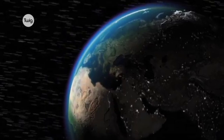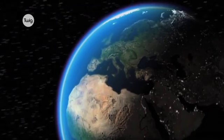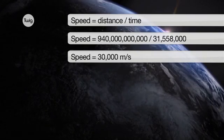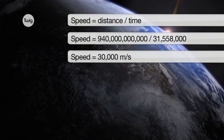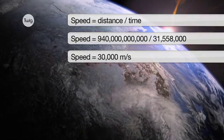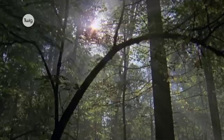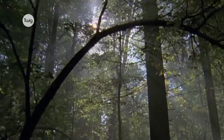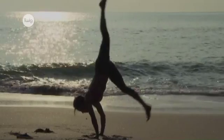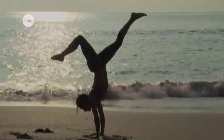So astronomers can calculate exactly how fast the Earth is moving in metres per second. This reveals that the Earth is travelling nearly 30,000 metres each and every second, even when it feels like you're standing still.